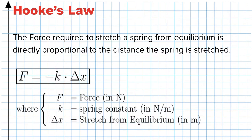F is the force the spring applies, delta x is the distance the spring is stretched from its natural or normal length, and k is the strength of the spring. The negative sign reminds us that the force is in the opposite direction — if I pull a spring to the right, the force the spring exerts is to the left.